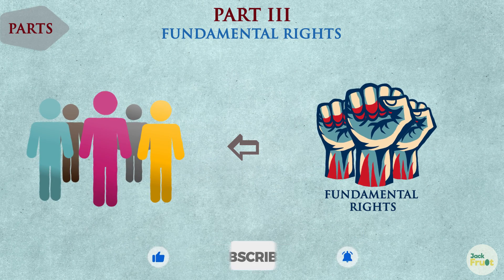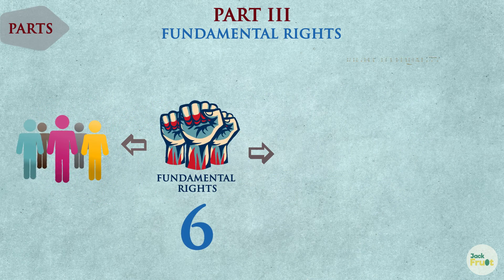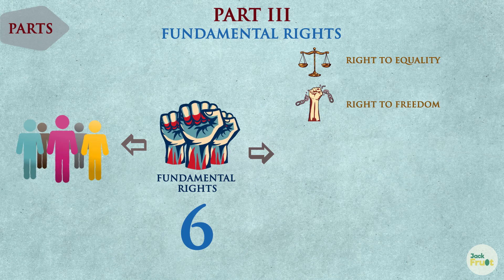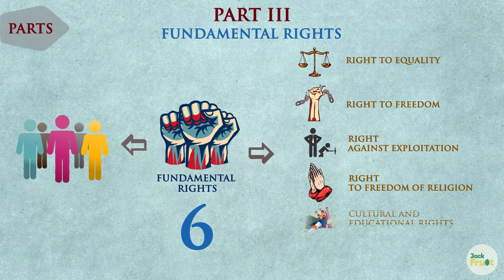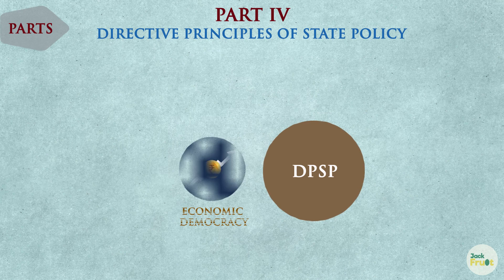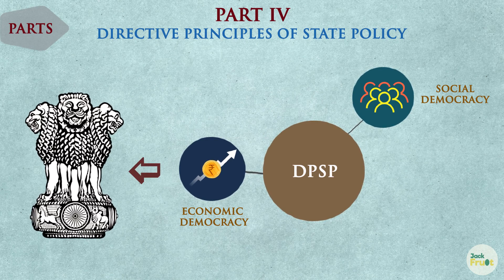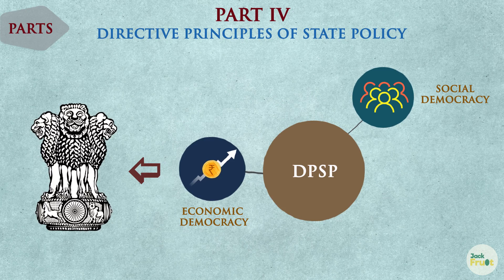Part 3 of the Constitution talks about the fundamental rights guaranteed to the citizens of India. The fundamental rights guaranteed under the Constitution are classified into six groups. Part 4 of the Constitution contains the Directive Principles of State Policy. These directives aim at the establishment of economic and social democracy in India. It shall be the duty of the state to follow these principles both in the matter of administration as well as in the making of laws.